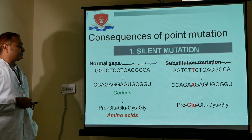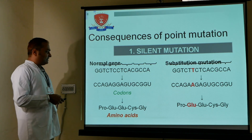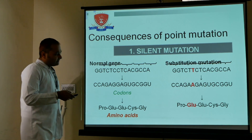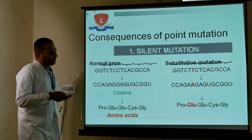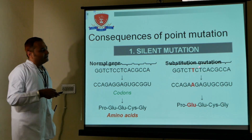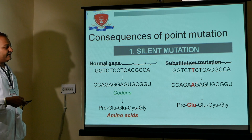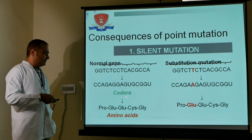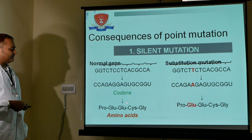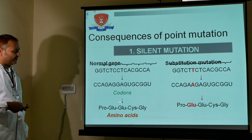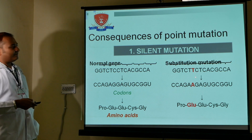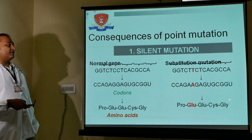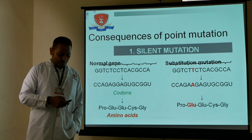In point mutation, if T is replaced by A at a specific position in the base pair sequence, the sequence changes. Under normal conditions, the original amino acid sequence is formed correctly. But if T is changed to A, the sequence is altered and a different kind of protein is formed.